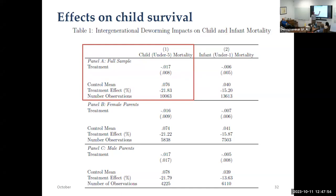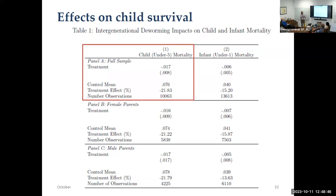Looking at under-one mortality — about half of under-five mortality — we still see negative point estimates, a large magnitude of about 15 percent drop, but not statistically significant. So under-five mortality is the stronger statistical finding. On fertility: there's no significant difference in total fertility. There's a slight difference in timing — in the control group, people have children on average about two months earlier than the treatment group. Some of those timing differences are marginally significant, but total fertility is not statistically different. If anything, the treatment group has kids a little later.